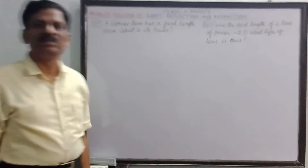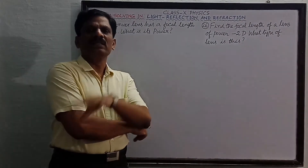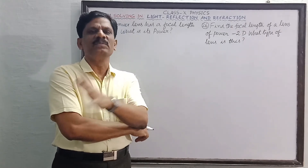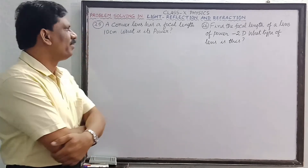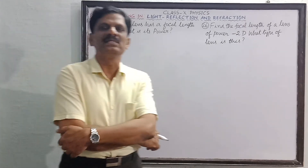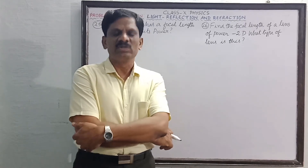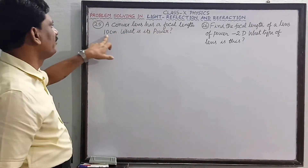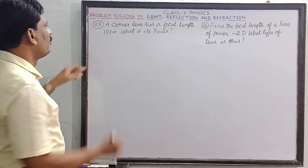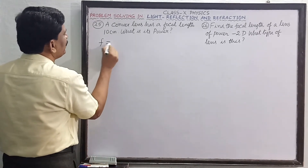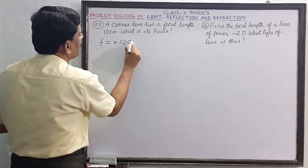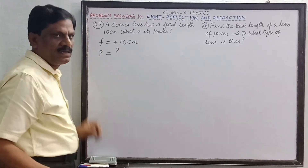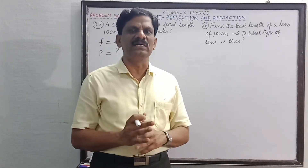Now we are going to solve some numerical problems based on the power of the lens. Power is numerically equal to the reciprocal of the focal length, and the SI unit of power is diopter. Diopter is the reciprocal of 1 meter. Problem number 25: A convex lens has a focal length of 10 centimeter. What is its power?